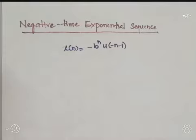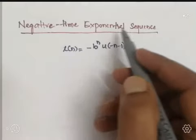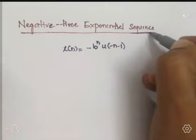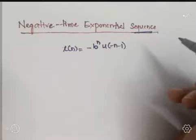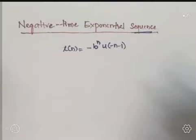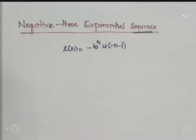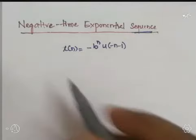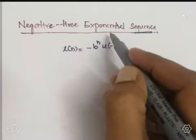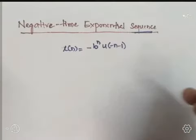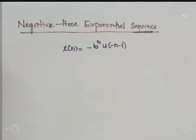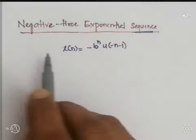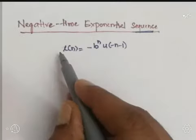Now we are discussing the negative time exponential sequence. That sequence is of infinite duration. In the previous case we discussed the positive time exponential sequence, also of infinite duration. Now we are dealing with the negative time exponential sequence, which is also of infinite duration.